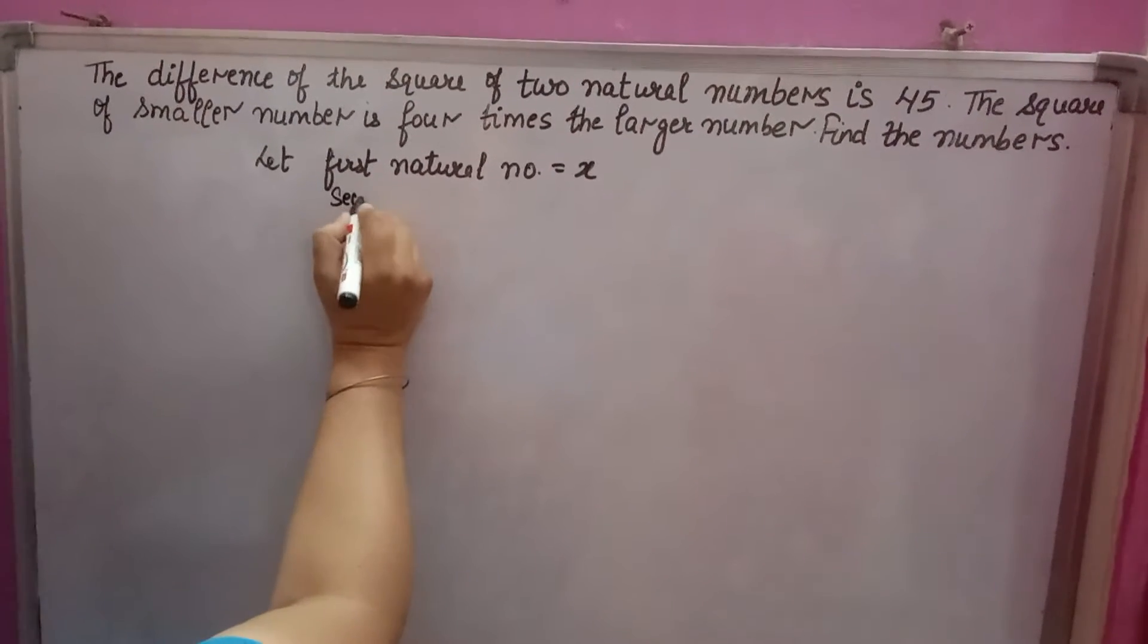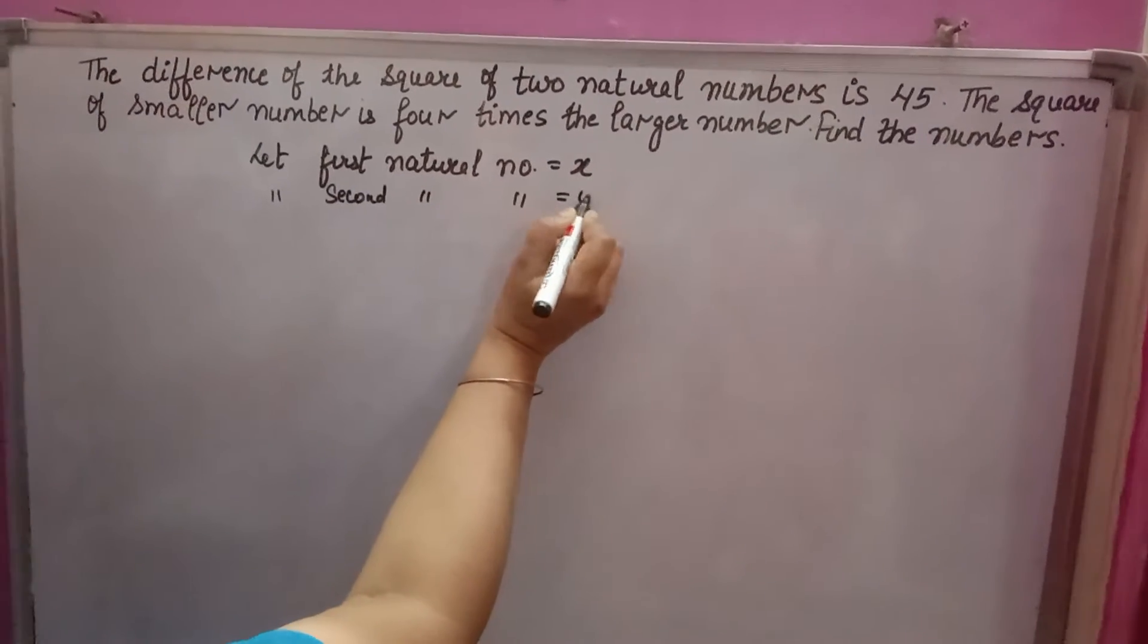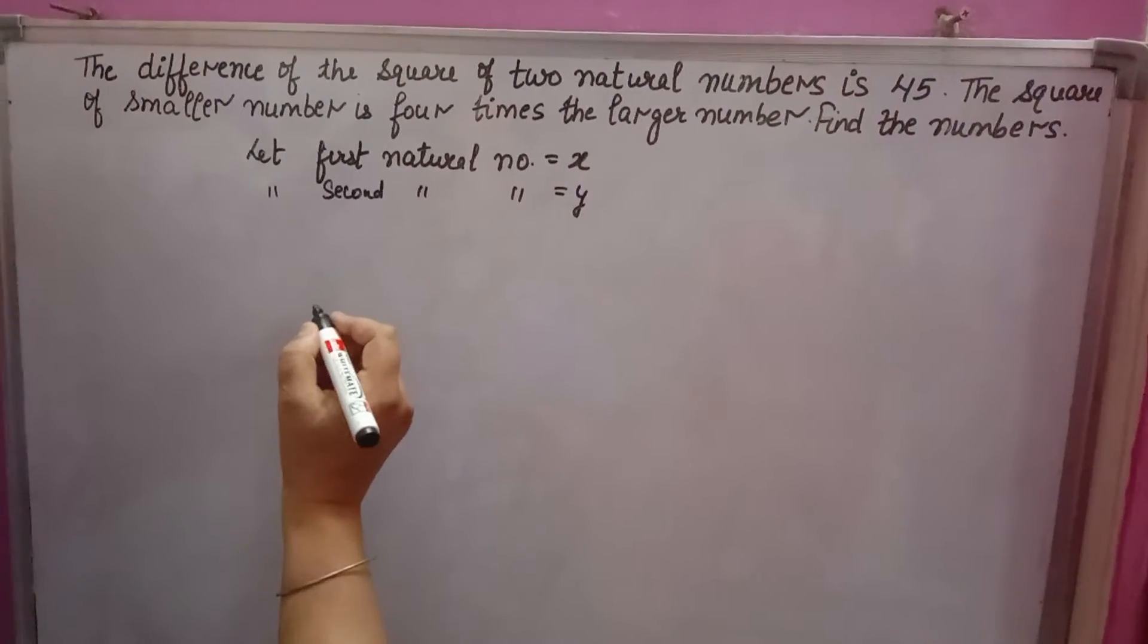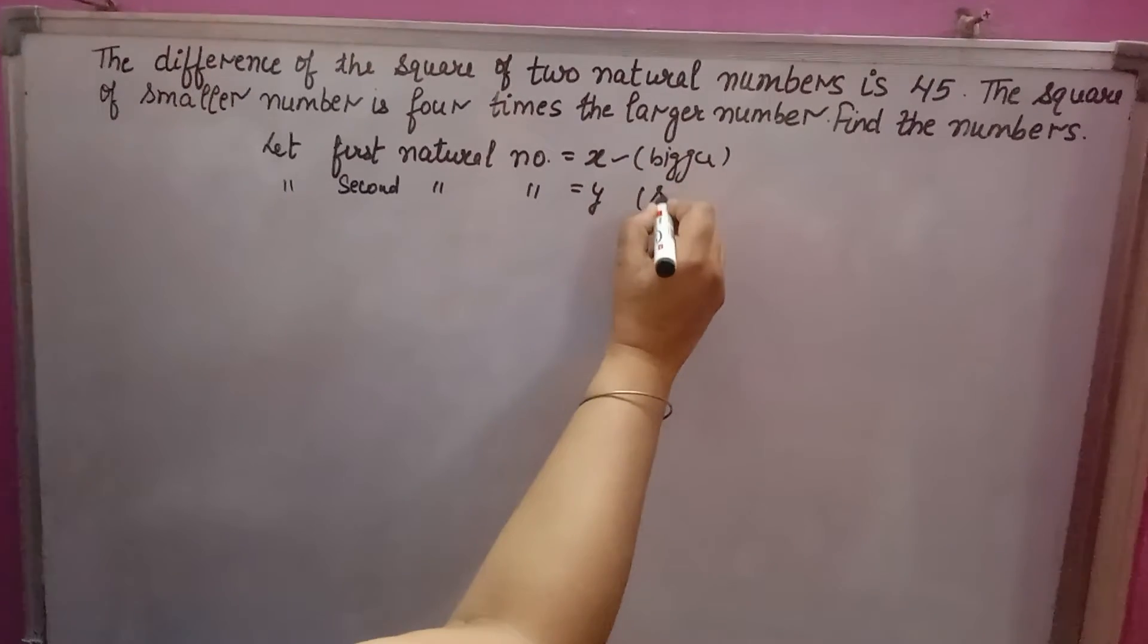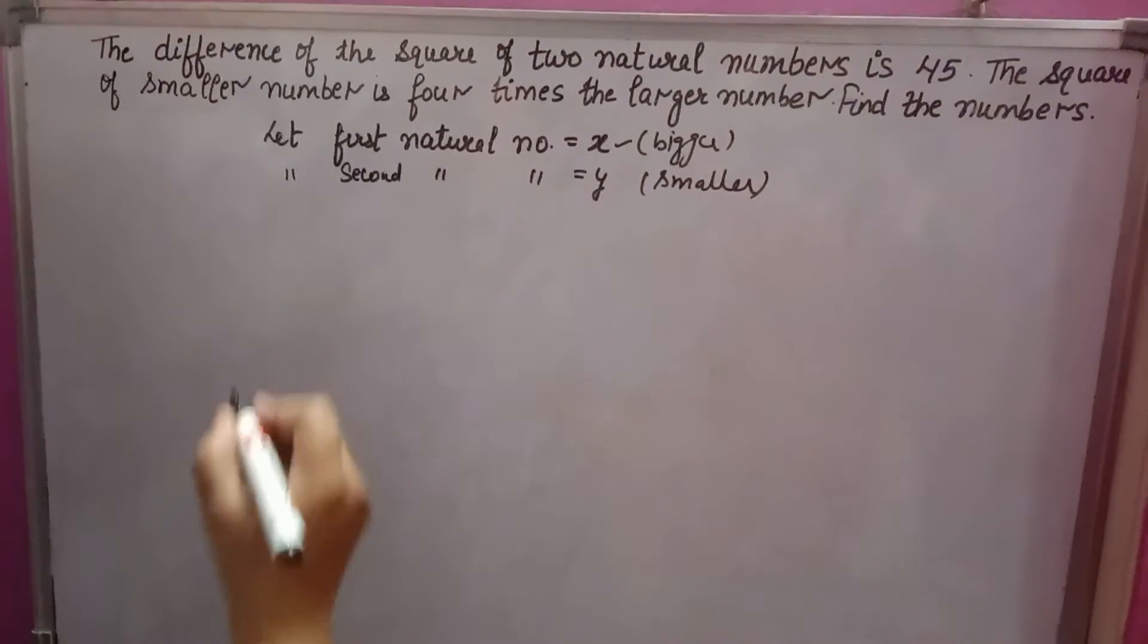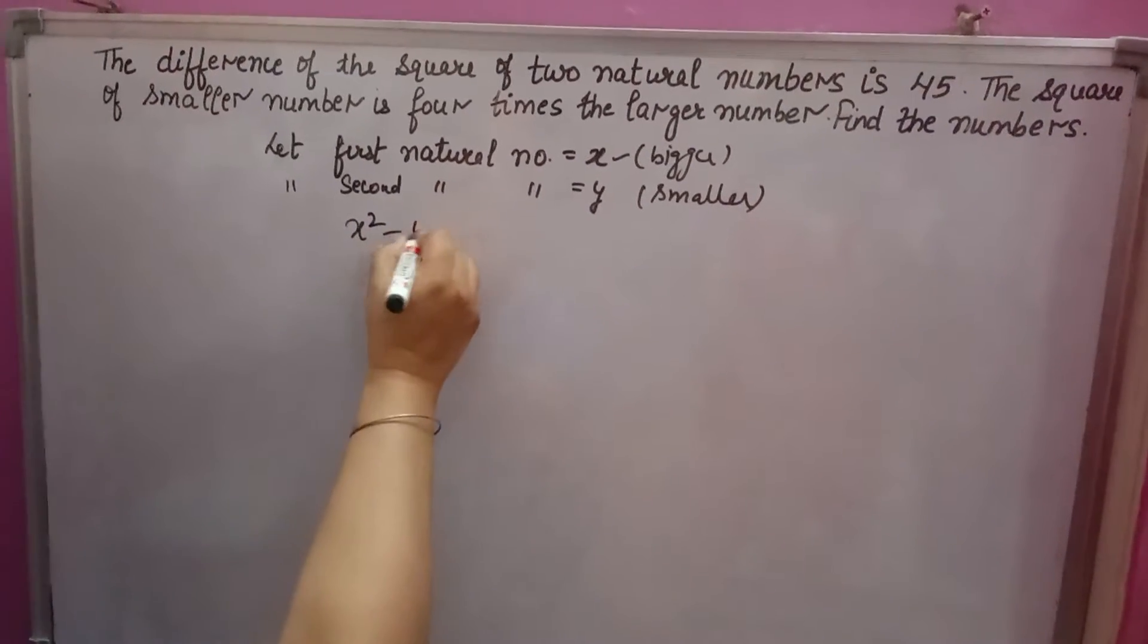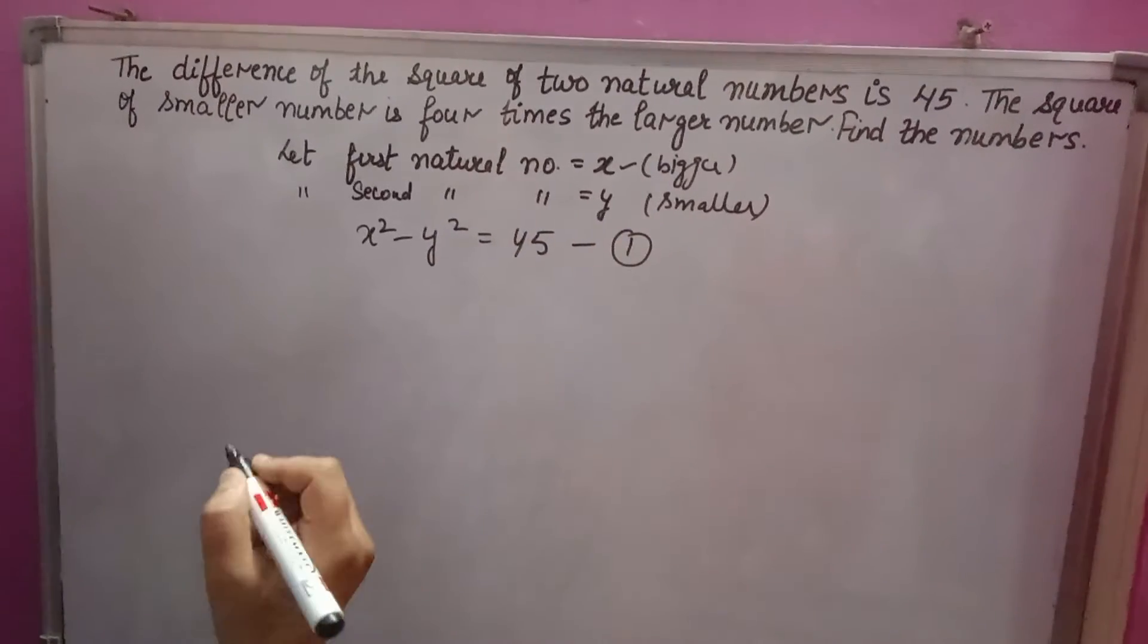Second natural number you will let is equal to y. Difference of the squares: suppose x is bigger and y is smaller. Square ka difference means x square minus y square is given equal to 45. This is the first equation.